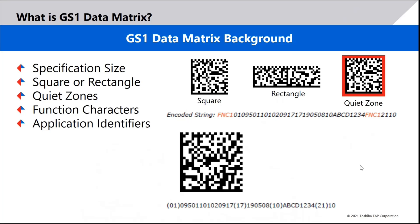Sizing charts are available on the GS1 website, which also include what's known as a quiet zone. In a 1D code this is a blank margin on the left and right; in a 2D code it's a surrounding margin. You need a certain amount of quiet zone to tell the barcode scanner where the symbol starts and stops and prevent confusion with other print.